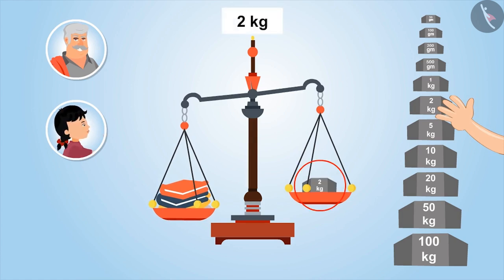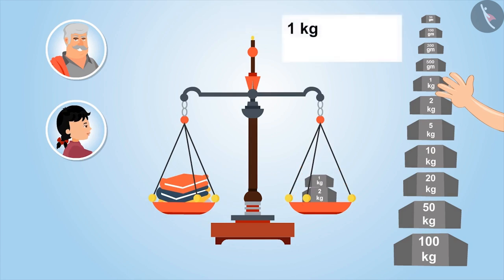"Oh, this is still on the upper side. Means I have to add some more weighing stones. Let's add one more stone of one kg to it. Now it becomes two and one, three kgs. Oh wow, this is balanced now! This means the weight of the books is three kgs."